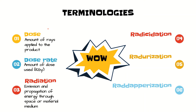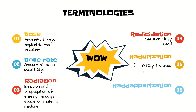Radiation is the emission and propagation of energy through space or a material medium. The dose categories are: radicidation, radiorization, and radappertization. Radicidation uses less than 1 kilograys, and radiorization uses 1 to 10 kilograys, which is a high dose rate.